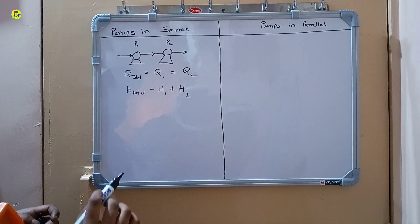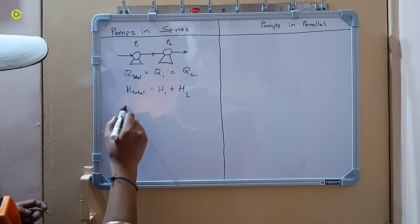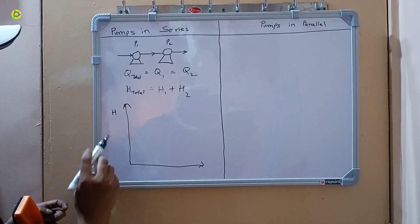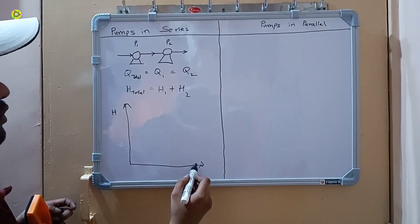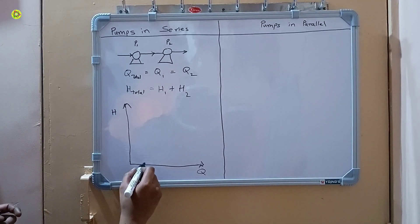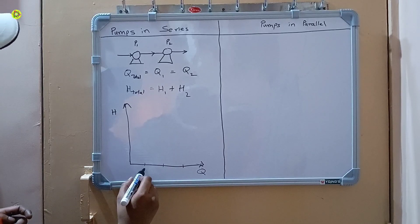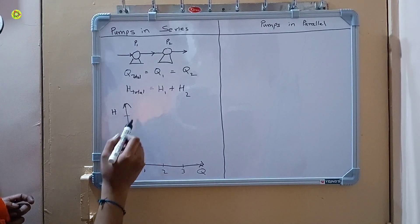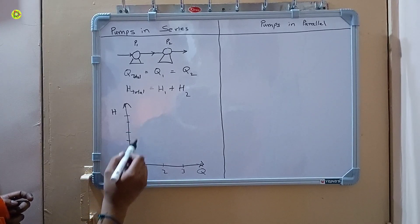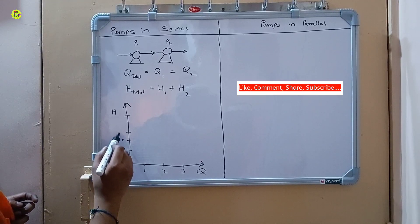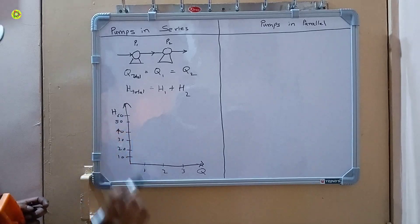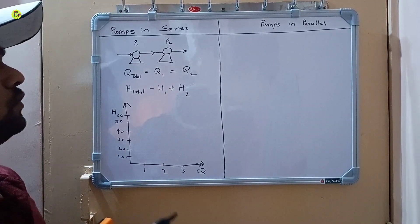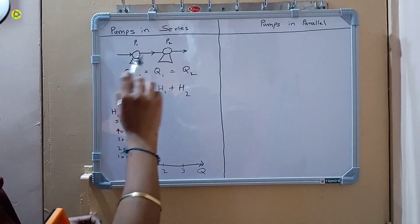On the graph, the Y-axis represents head and the X-axis represents flow rate Q. The flow rate range goes from one to three meter cube per hour, and the head scale goes from 10 to 60 meters. The pumps in series arrangement is used to increase the head of our pumps.